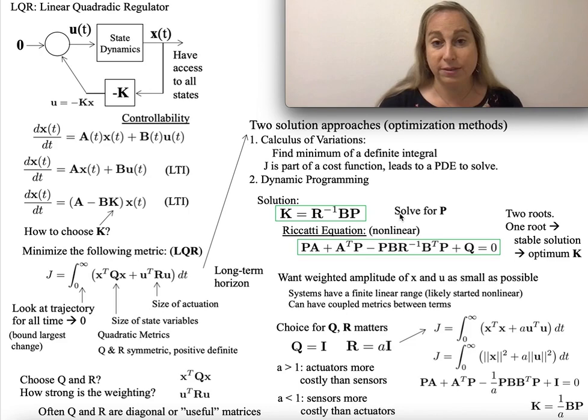And the solution is very interesting. I do get a value for K. K would then be basically R inverse. Remember, it's that same R that we had over here. B, which comes out of the what is driving how the states are getting affected by the input. And a matrix P. And you're like, great, now I need to find P.